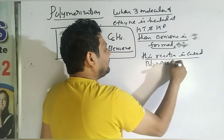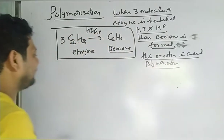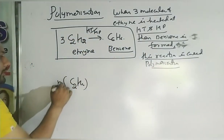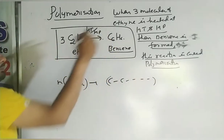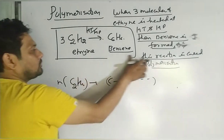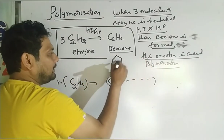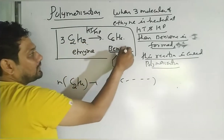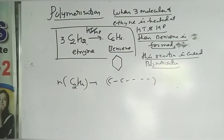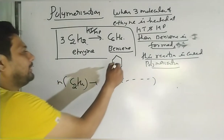When three molecules of ethyne are heated at high temperature — thousand degrees Celsius — and high pressure, they combine to form benzene C6H6. Six carbons form a single molecule. Such a reaction is called polymerization. This is the sign/structure of benzene — note it down.